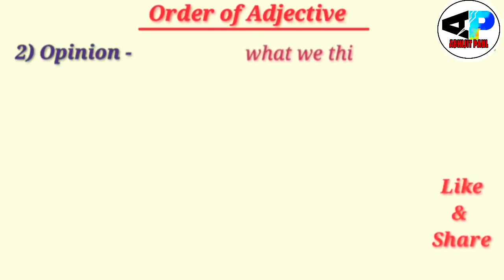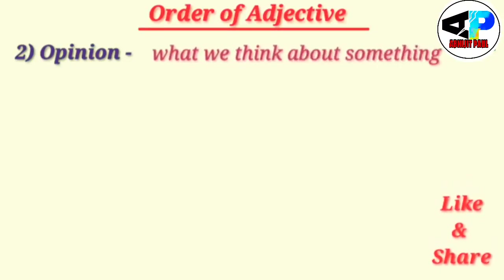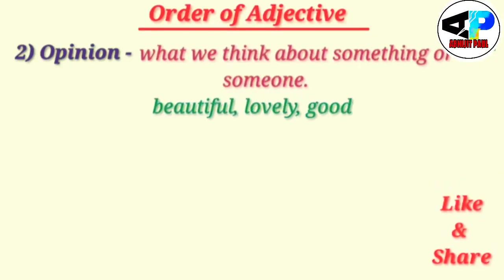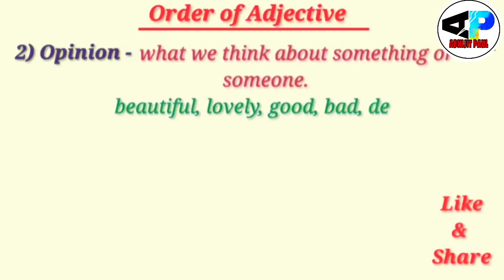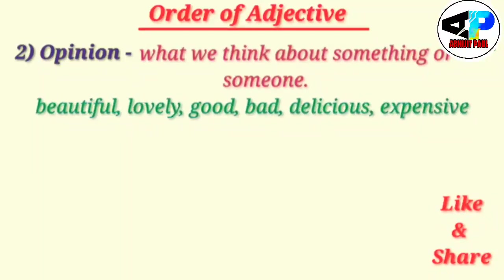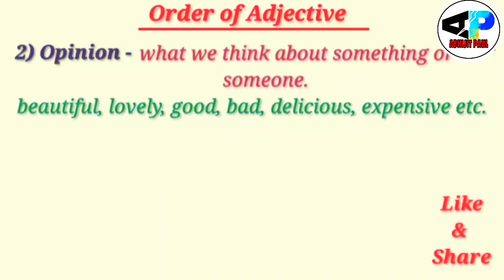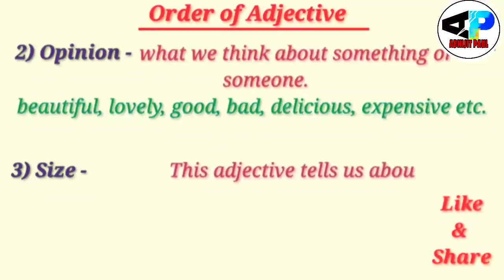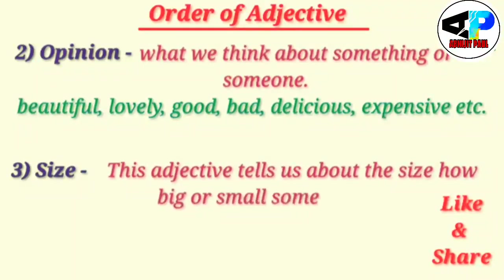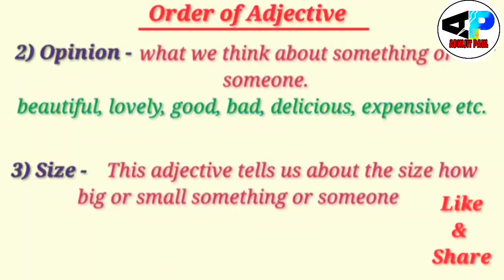The second order will be opinion. What is opinion? It is what we think about something or someone — that is our opinion. For example: beautiful, lovely, good, bad, delicious, expensive — these are opinion adjectives.